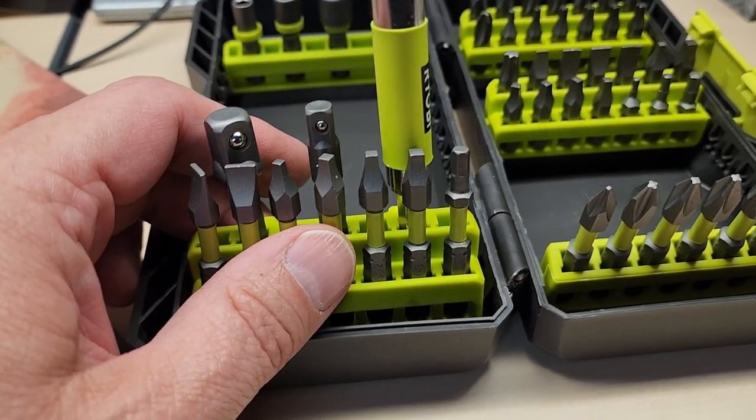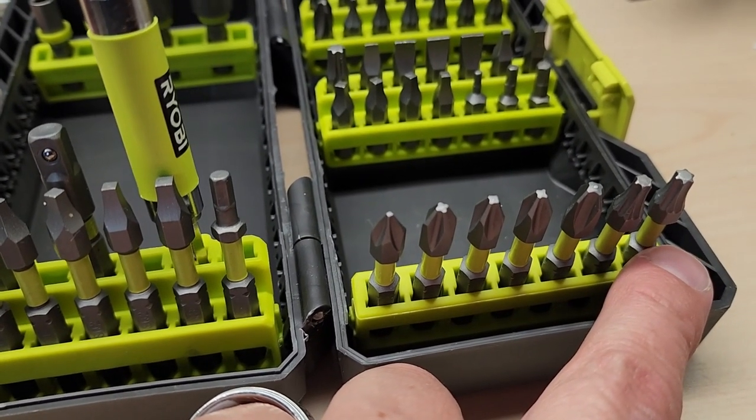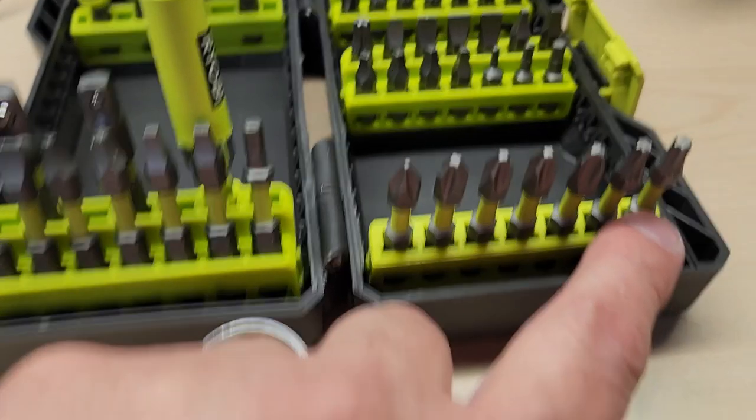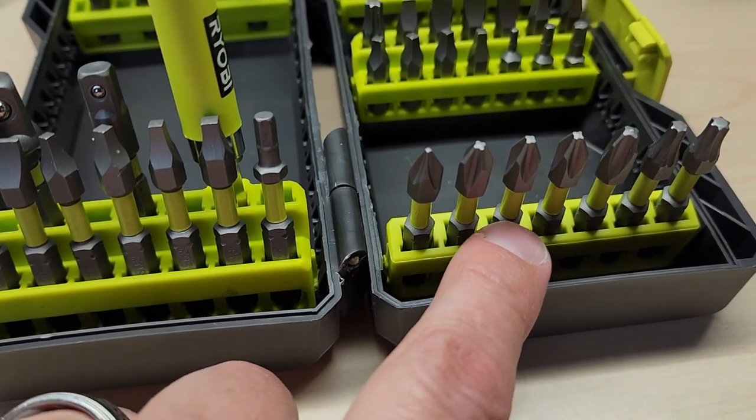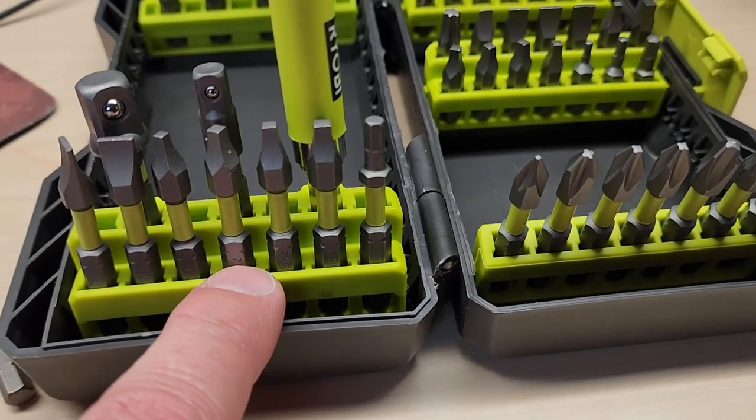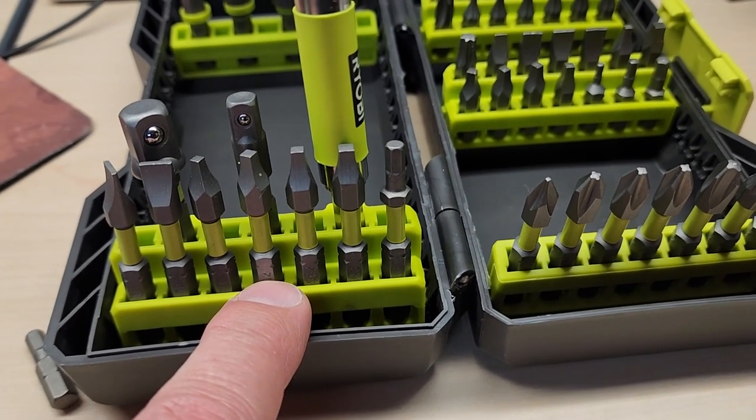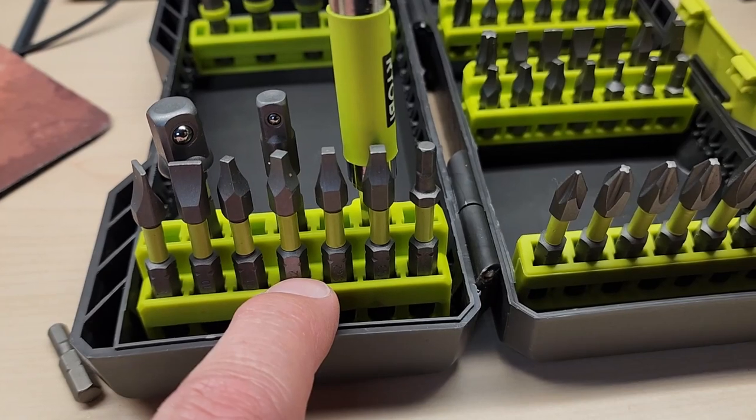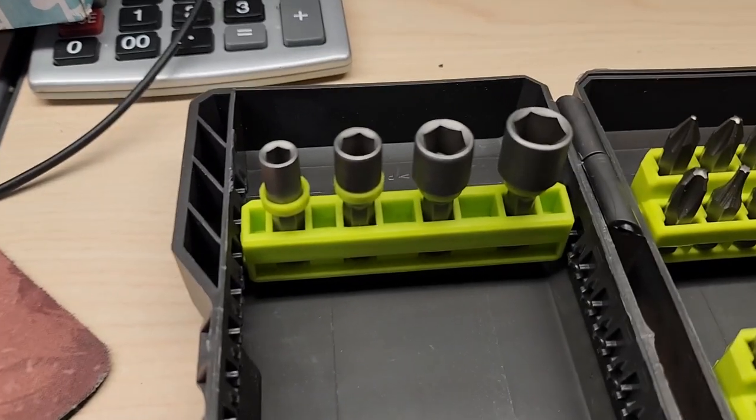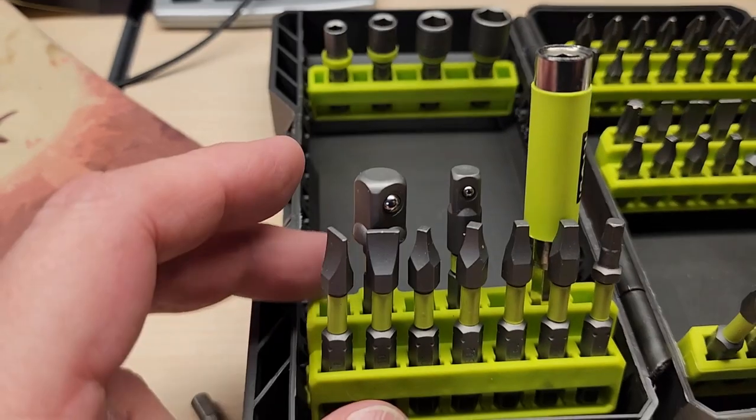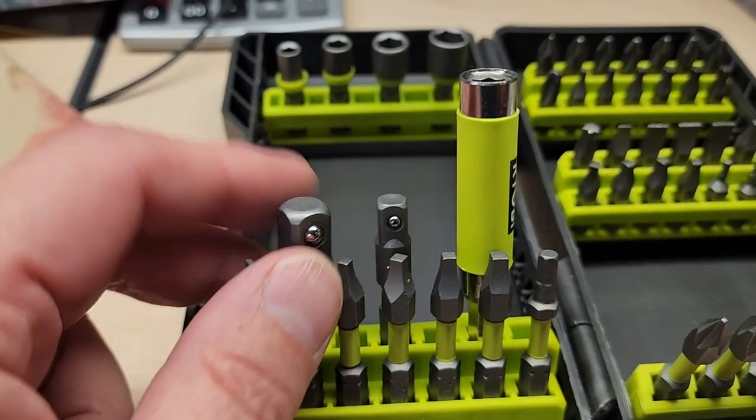So we've got, as far as torsion, we've got Torx bits over here. T25 and a T20. And the Phillips, you're going to get three number twos and a number three and a number one Phillips bit. More of the Robertson or square bits, you're going to get a number three, two number twos, and a number one on that. The flatheads, you get an eight and a ten. Nut drivers, I called those socket drivers that are nut drivers. So anyway, those are nut drivers. Then you've got quarter inch and three eighths socket drivers, hex shank.